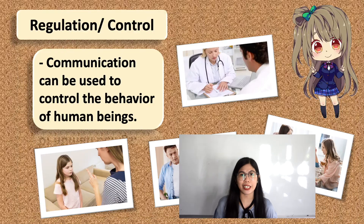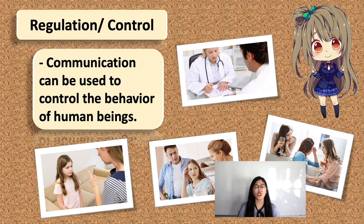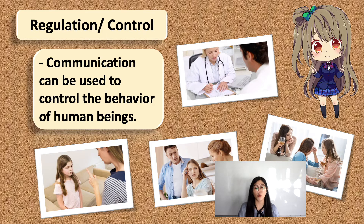The first function is regulation or control. Communication can be used to control the behavior of human beings — it pertains to how humans should behave. It can also be used to regulate the nature and amount of activities humans engage in. For example, a doctor's prescription: when we are sick, our doctors prescribe medicines, and if we want to feel better, we follow the prescription given by the doctor, which regulates our action.